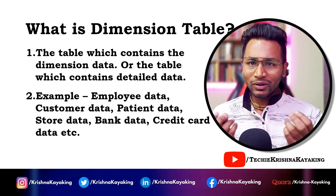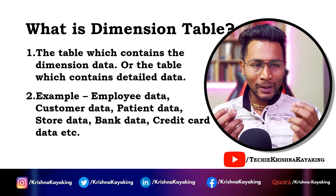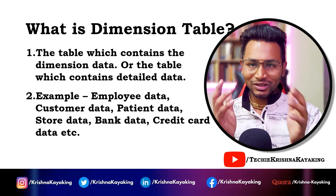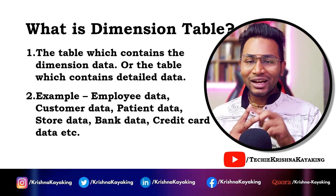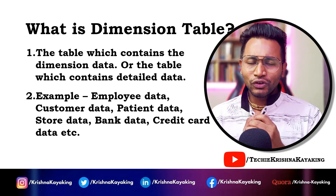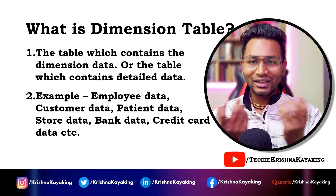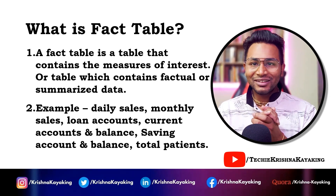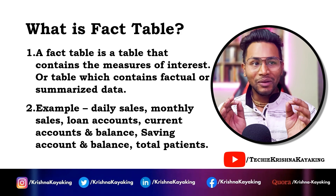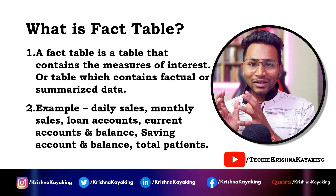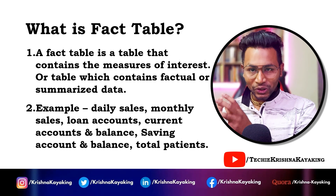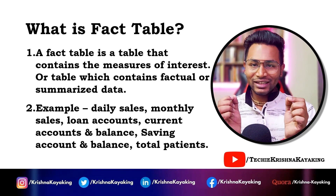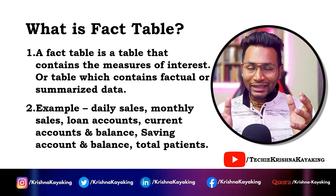Examples of dimension tables include employee data, customer data, patient data — whatever project or domain you work in, everything has detailed data and summarized data. A data warehouse project mostly consists of dimension tables and fact tables. Even in banking projects — current accounts, saving accounts, credit cards — all that data is in detailed form. What is a fact table? A fact table is a table that contains measures of interest, or factual or summarized data derived from the dimension data.